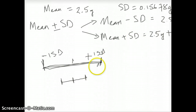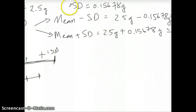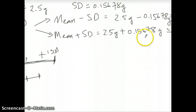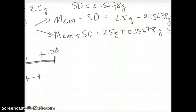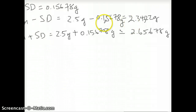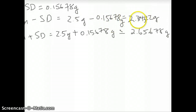If you write mean minus standard deviation and mean plus standard deviation as numbers, taking the mean of 2.5 grams and subtracting or adding 0.15678 grams, you get 2.34322 grams and 2.65678 grams respectively.